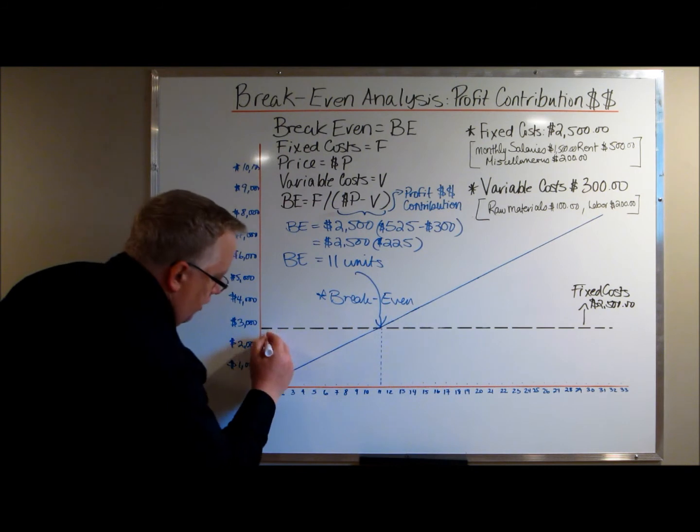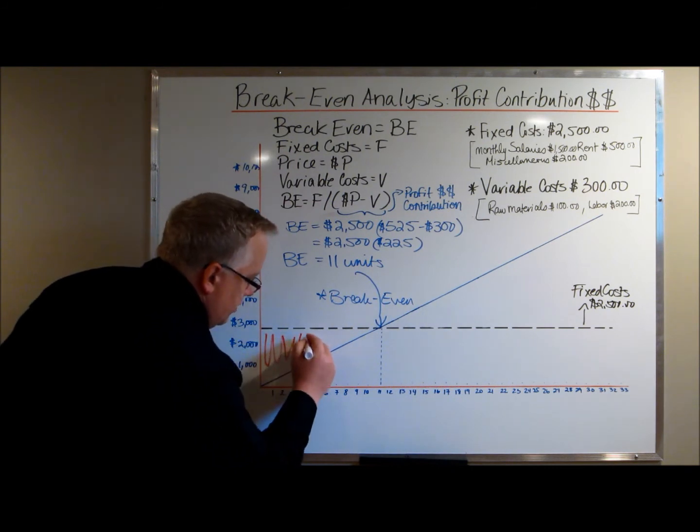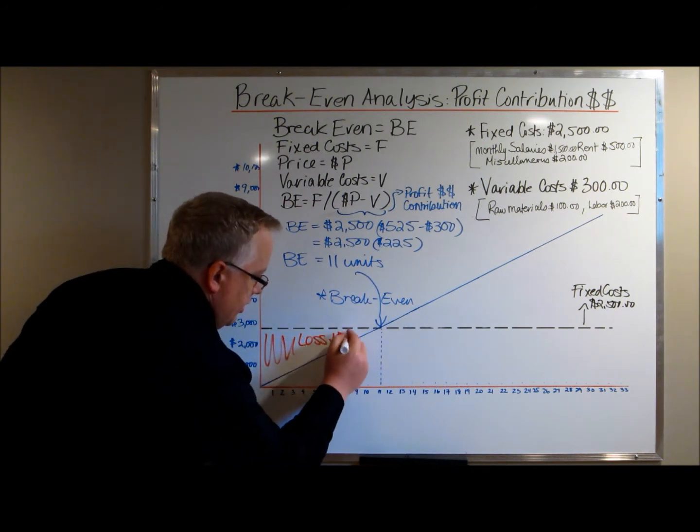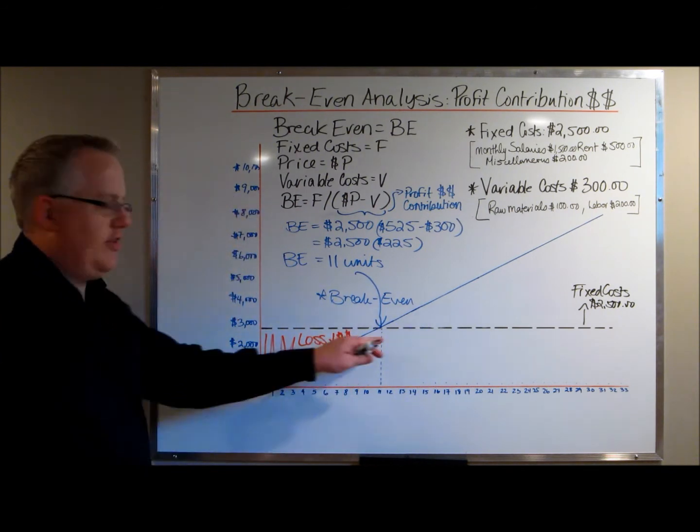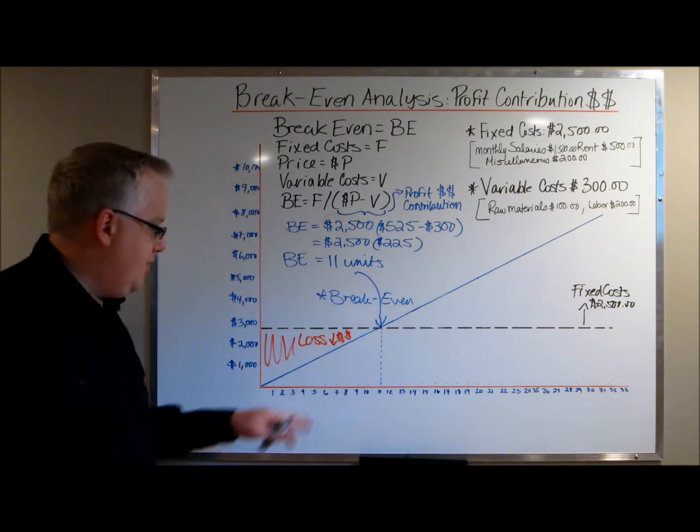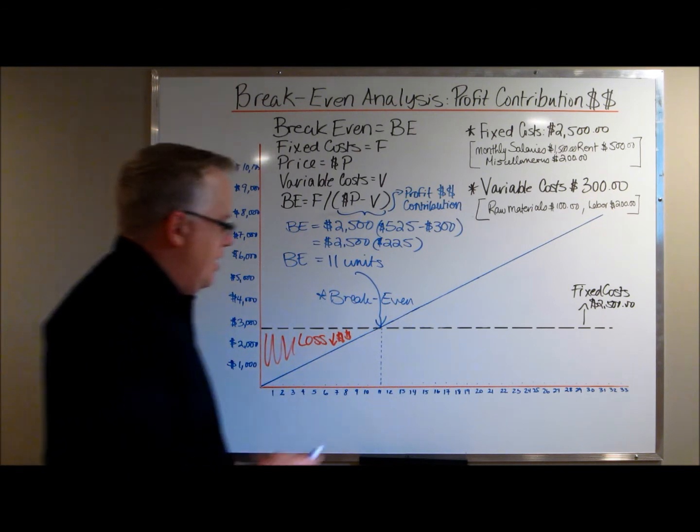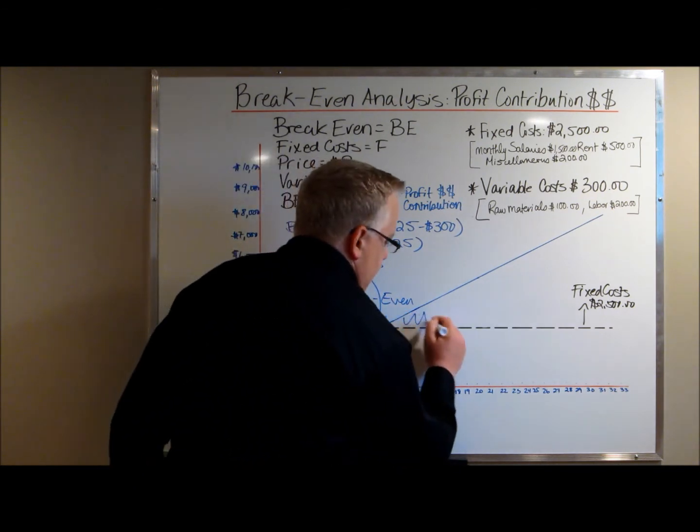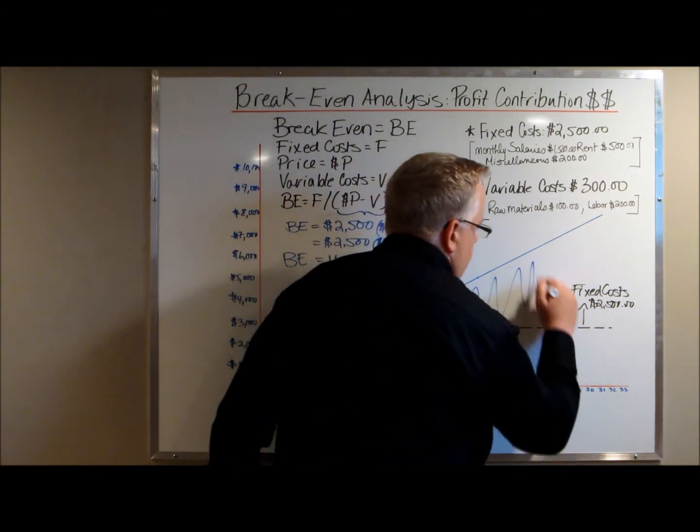So, all of this area right here is a loss. The company, until it sells 11 units, it hasn't reached break even, so it's losing money. Everything above 11 units sold is profit.